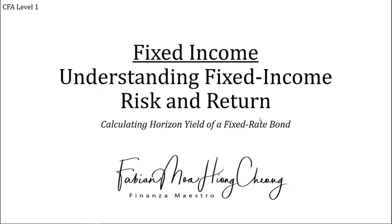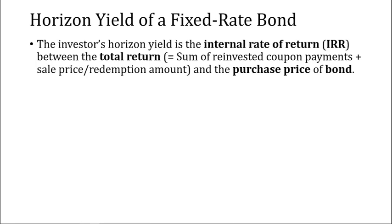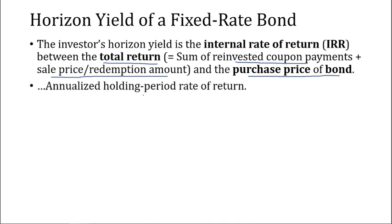In this video, we'll be looking at CFA Level 1's Fixed Income, for the reading Understanding Fixed Income Risk and Return, and we'll see how we calculate the horizon yield of a fixed rate bond. The horizon yield for the investor is the internal rate of return, or IRR, between the total return and the purchase price of the bond. The total return of the bond will be the sum of reinvested coupon payments plus the sell price or the redemption amount. So the horizon yield is an annualized holding period rate of return.